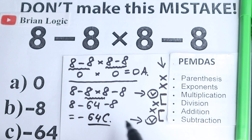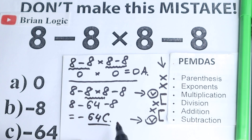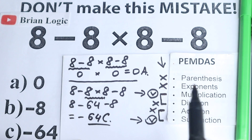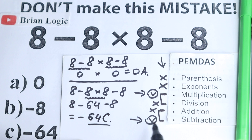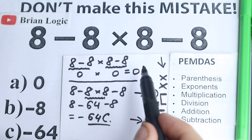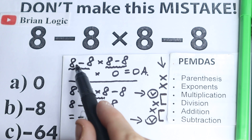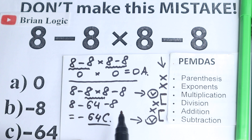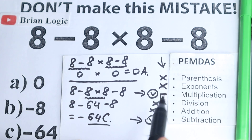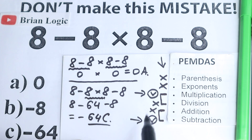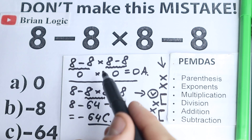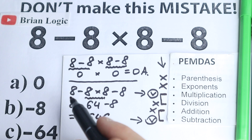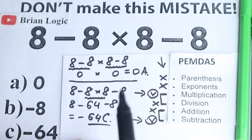One really important point: this is option C. What is the correct answer — 0 or minus 64? As I explained, the correct order of operations gives us minus 64 as the correct answer. The solution of 0 is wrong because it does subtraction first, then jumps to multiply — that is a very big mistake and a wrong solution according to PEMDAS.